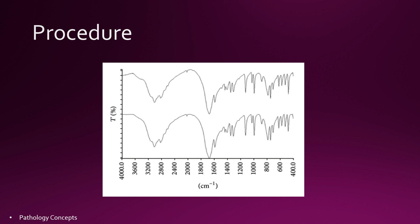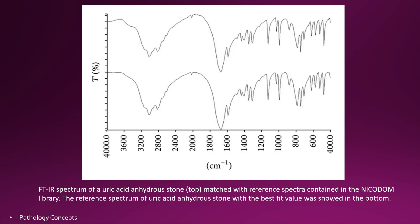All FTIR spectra of kidney stones are then computer matched against a library of spectra to generate a report on various components. The graph is compared and the result is reported accordingly. Here, the FTIR spectrum of a uric acid anhydrous stone is matched with a reference spectra contained in the library. The reference spectra of uric acid anhydrous stone with the best fit value is shown at the bottom.